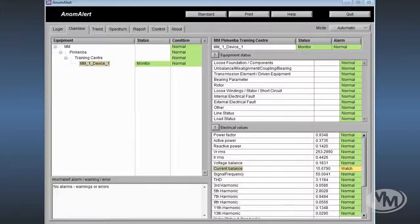To the left, we have an equipment tree detailing information on all connected units. As can be seen here, there is only one device currently connected. This is the training simulator we have just seen which is based in Pinkenba, Brisbane.